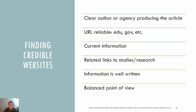Credible websites will be useful not only for this course but also in whatever line of work you end up in. When evaluating a website, use your own critical thinking skills to analyze the content. A credible website would have a clear author or agency — like the American Heart Association — producing the article. Reliable URLs are generally .gov or .edu sites. Check the currency of the website, and if any research or studies are mentioned, there should be citations or links to those. Consider how well written the article is — free of grammatical, spelling, and typographical errors — and whether there is a balanced point of view versus bias.